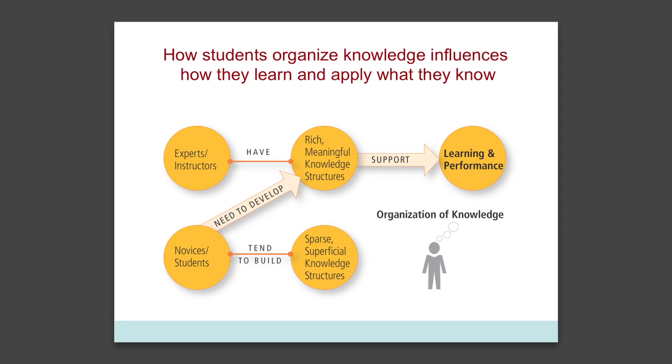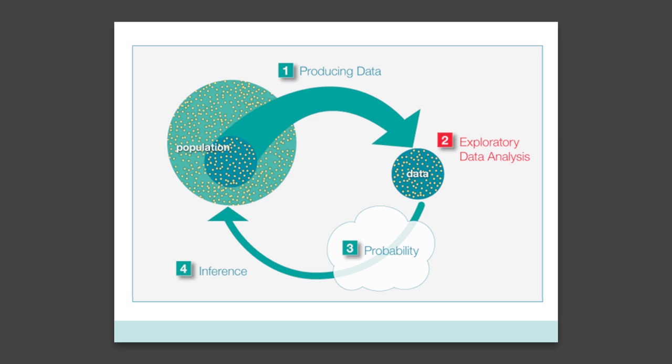So in this online statistics course, it begins by showing students the big picture of statistics — basically how the units of the course fit together — and then returns to this picture intermittently throughout the course so students can see how what they've just learned connects to what they're about to learn.